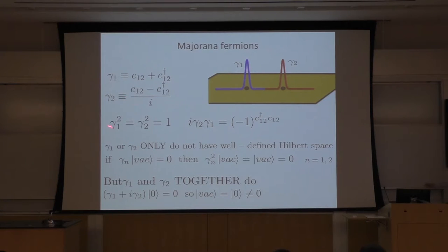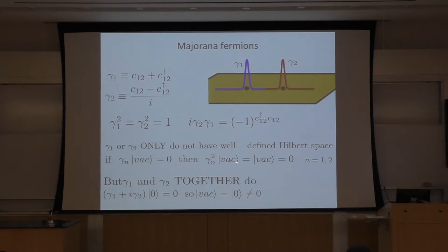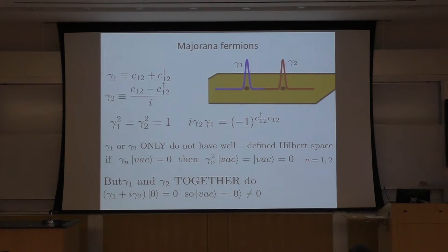But can we define a Hilbert space just associated with gamma one? The answer is no — gamma one by itself is not physical, basically because we cannot have a single vortex in nature. You can easily see that gamma one doesn't have a vacuum, so it's not a well-defined operator. Why? If it had a vacuum, then gamma one on vacuum gives zero by definition. But gamma one squared must be one, so acting gamma one again gives vacuum itself — which must equal zero. I get an inconsistency. So a single Majorana fermion is unphysical.